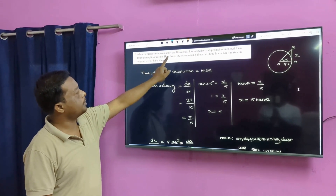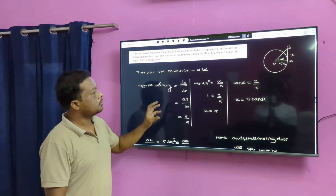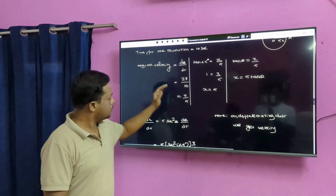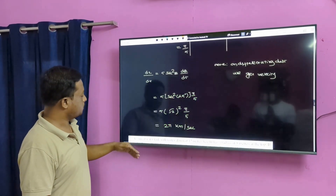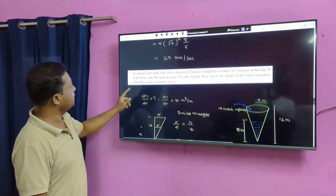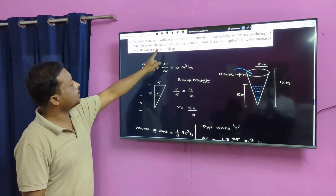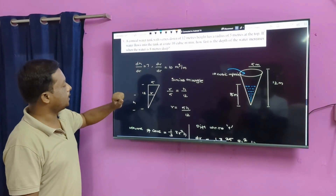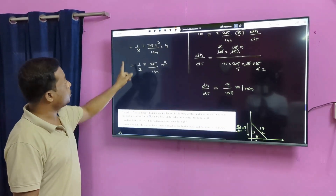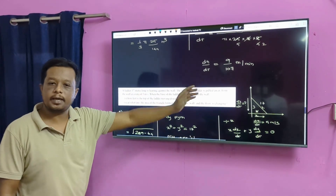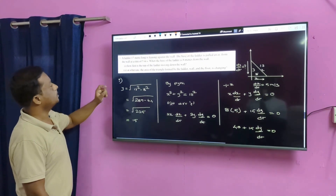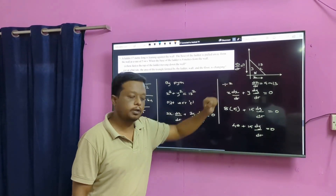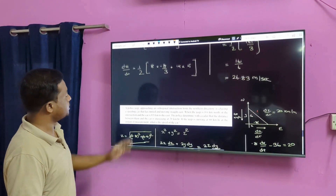We can make one revolution every 10 seconds. So change in area, change in x value, change in y value — something easier. Next, eighth question — a conical water tank. So change in volume, change in height, change in x value, change in y value, change in area — these are very important parts.